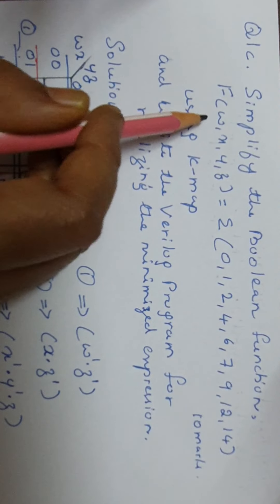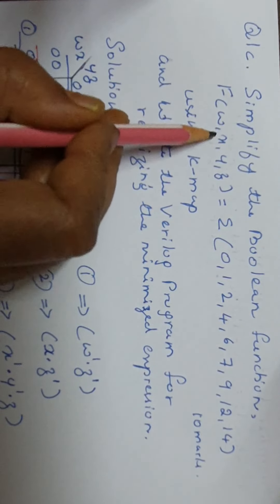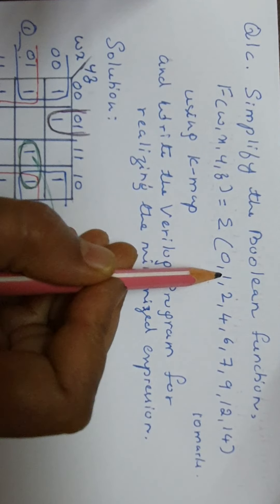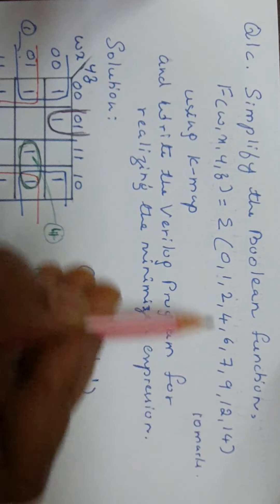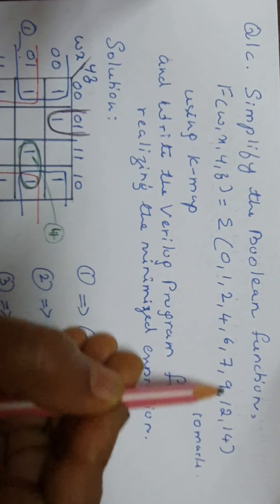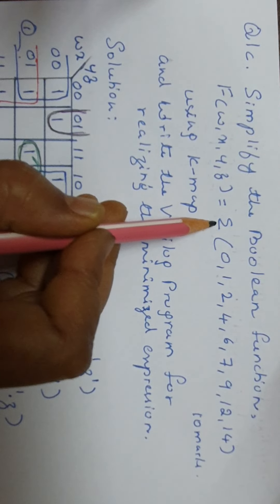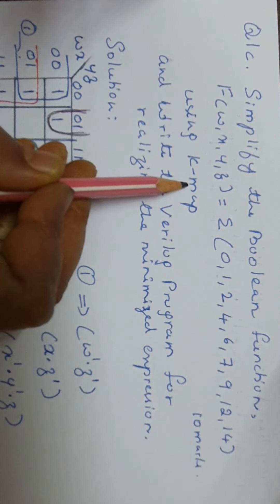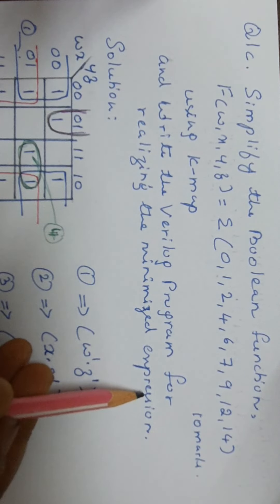Next we shall solve question 1C. Simplify the Boolean function F of W, X, Y, Z equal to sigma M of 0, 1, 2, 4, 6, 7, 9, 12, 14. Sigma means these are the minterms — sum of minterms. The expression is given in SOP form, sum of products. We have to simplify using K-map and write the Verilog program for realizing the minimized expression. It carries 10 marks.